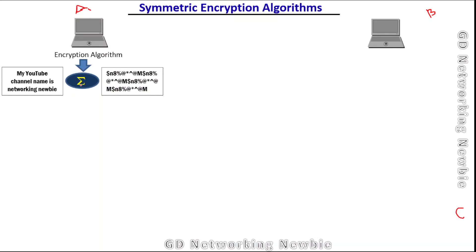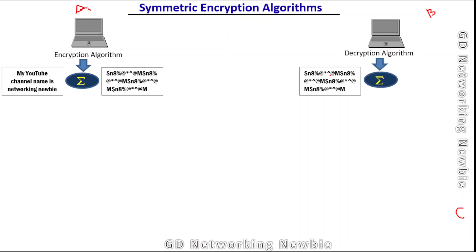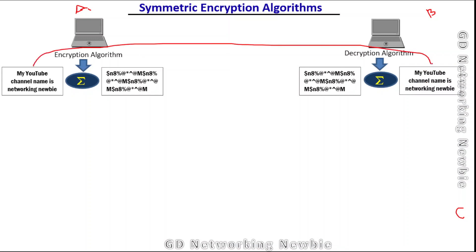The scrambled message will be difficult to be understood by some third party or any user C. When user B receives that encrypted message, the destination user B will use a decryption algorithm. After processing the encrypted message using the decryption algorithm, user B will be able to recover the original message, as you can see here — after decryption the user has got the actual message that was sent.